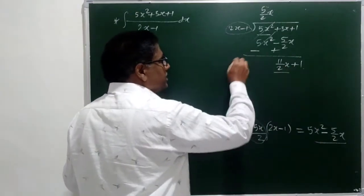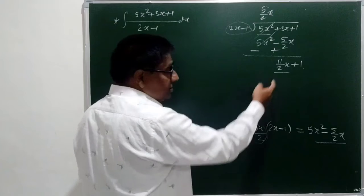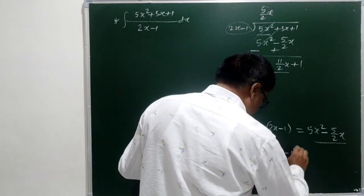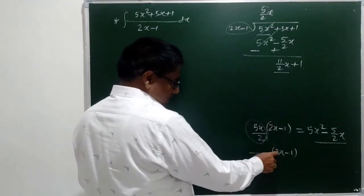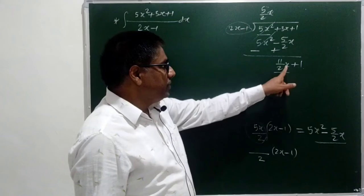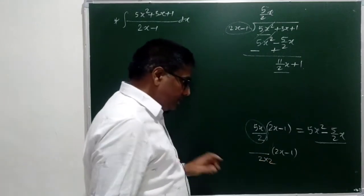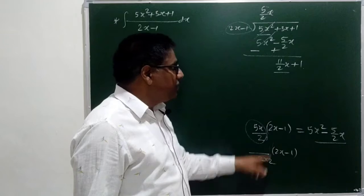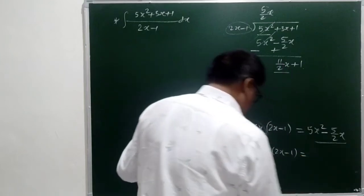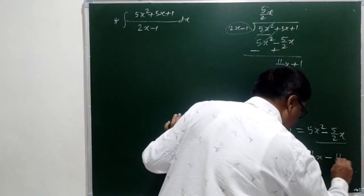We want 11 by 2x out of 2x minus 1. For that, let us again find the multiplier of 2x minus 1 in order to have 11 by 2x. Therefore, 2x minus 1 into — we don't want this 2, so let us divide by 2. After dividing by 2 we will get x, but we want 11 by 2x. We want the coefficient 11, so let us multiply by 11. After opening this bracket, 2 will get cancelled, giving 11 by 2x minus 11 by 4.